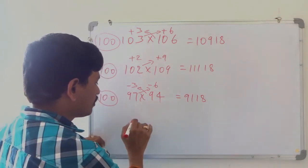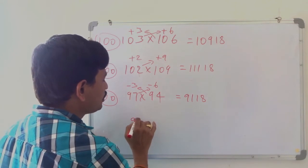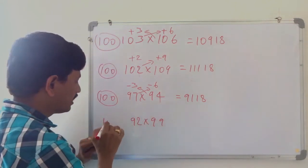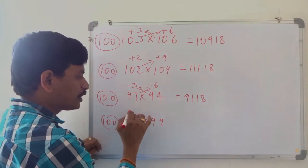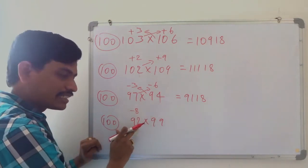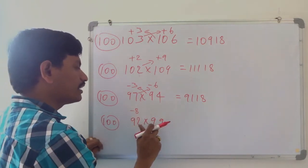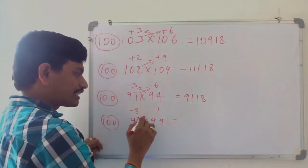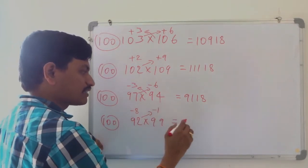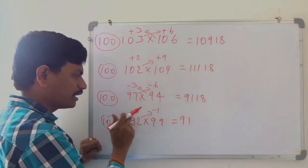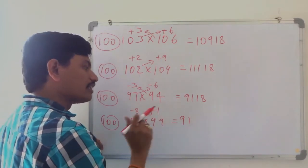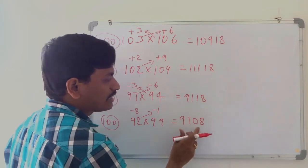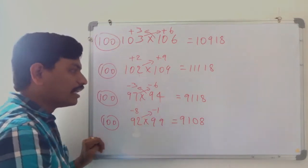Like this we can take another number: 92 multiplied by 99. Here also base 100. 92 is 8 lesser than 100, and 99 is 1 lesser than 100. Cross subtraction: 92 minus 1 is 91, same as 99 minus 8 is 91. And 8 ones are 8. We need 2 digits, that's why I am taking 08. So the answer is 9108.